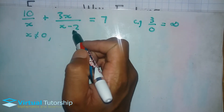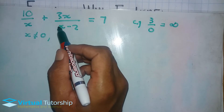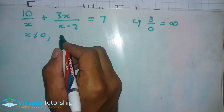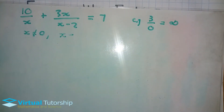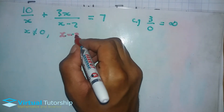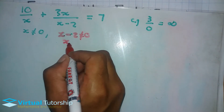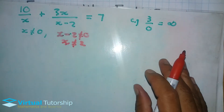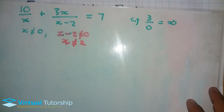For the fraction 3x over (x minus 2), if the denominator becomes 0, the whole equation is undefined. So we have to state that x minus 2 must not equal 0. Solving for x gives x equals 2, so x must not equal 2.